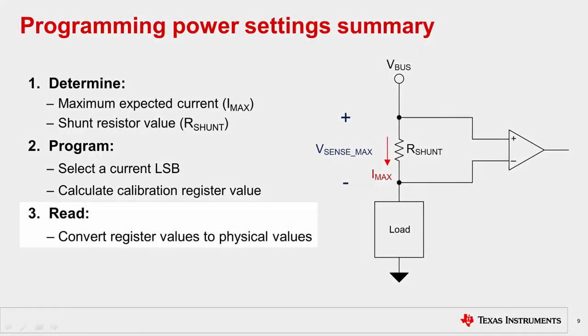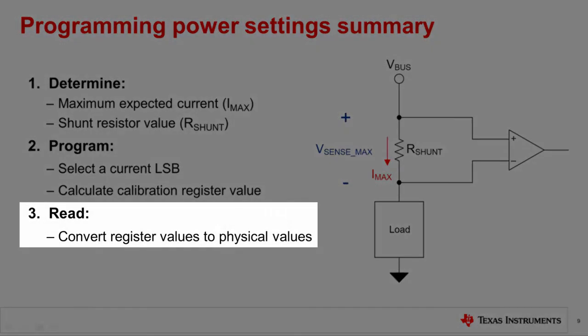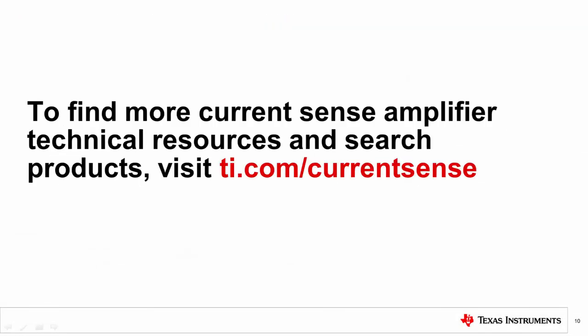Step three is to read the register values. Take into account bit shifting and byte order when applicable. Multiplying the register value with its LSB gives us the physical value that we are looking for. That concludes our video. Thank you for watching. Please try the quiz to check your understanding of the content. For more information and videos on current sense amplifiers, please visit ti.com/CurrentSense.